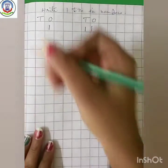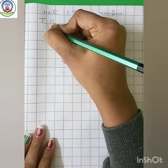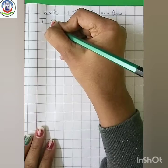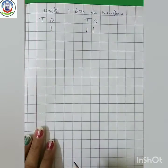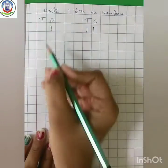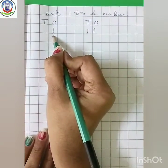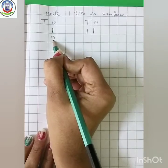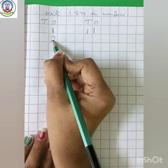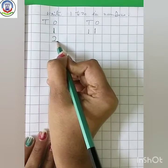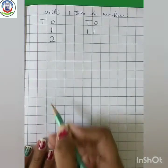Let's start. First of all, make a standing line. 1. Now, make a curve and a slanting line. 2.